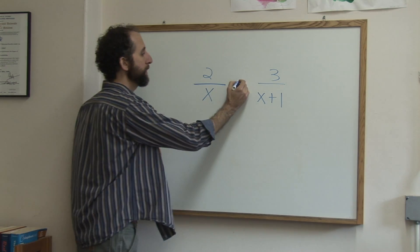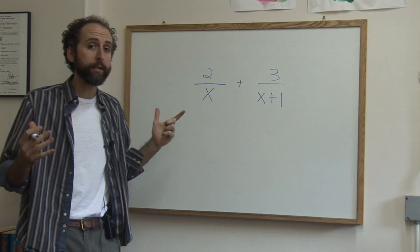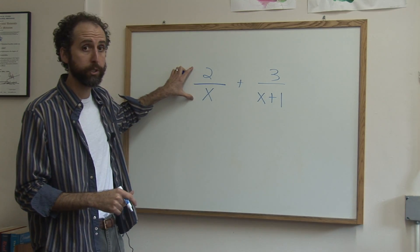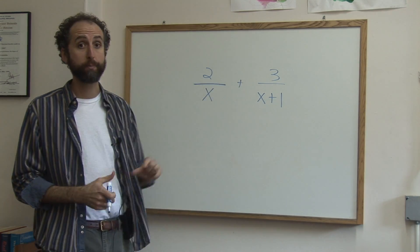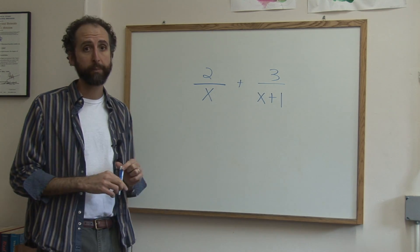Now if we wanted to add these two up, just like any time we add fractions, we need to make sure that the denominators match up. So we're going to have to get a common denominator here.